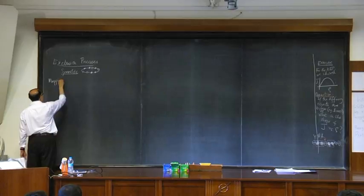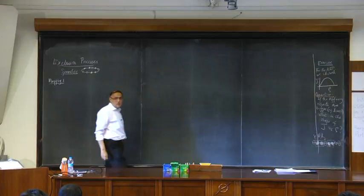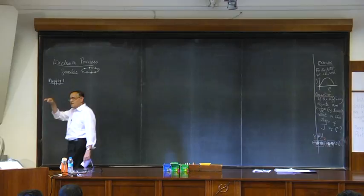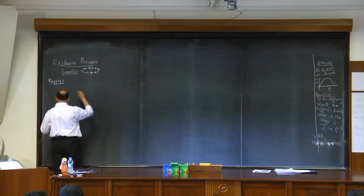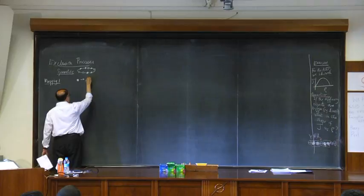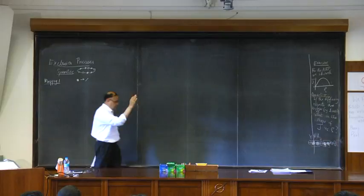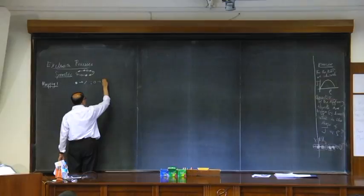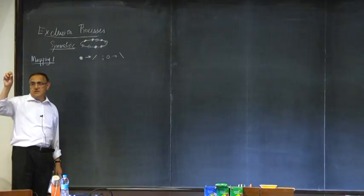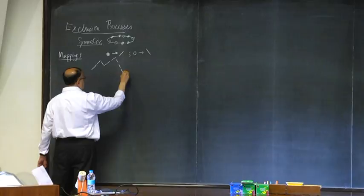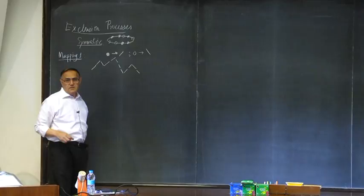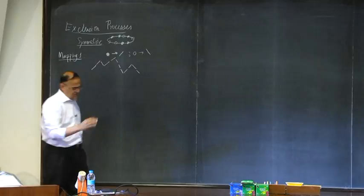Mapping number one: we'll map this problem onto an interface problem. The mapping is simple. Suppose you have a particle — you associate it with a link pointing upward along the plus 45-degree direction, and a hole you associate with a link pointing the other way. These links are parts of the interface you build up. Successive links are drawn from where the previous link stopped, so you can build up a discrete interface.